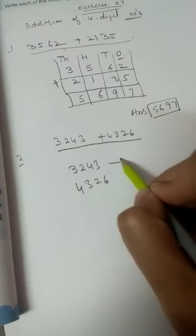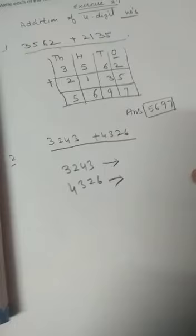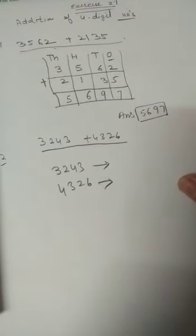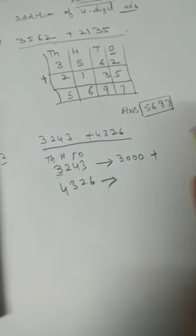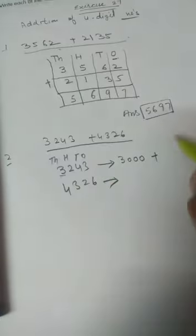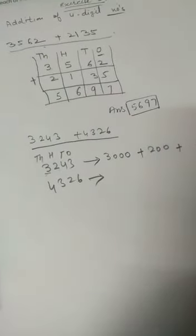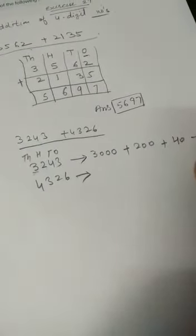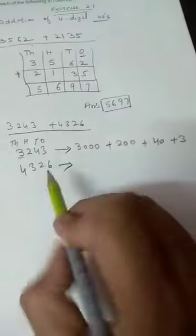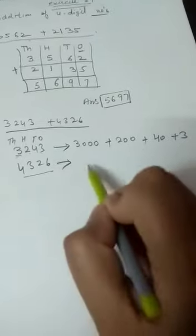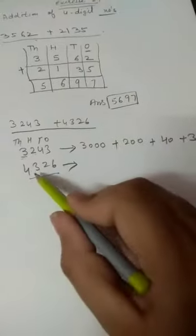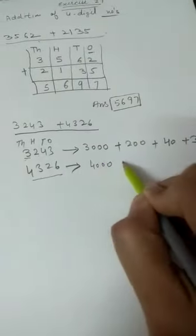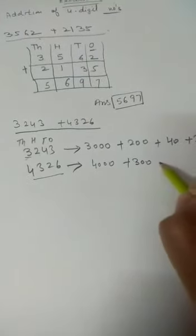So write down its expanded form first of all. In the last chapter I told you. What is the expanded form? 1, 10, 100, and 1000. How many thousands are here? 3. So write down 3000 plus. How many hundreds are here? 2. So write down 200. How many tens? 40, 4 tens, and 3 ones. The same way. When you have to write down its expanded form, 1000 should be under 1000 place, 100 should be under 100, 10s should be under 10s, and 1s should be under 1s. How many thousands are here? 4. So write down 4000 plus 300 plus 20 plus 6.